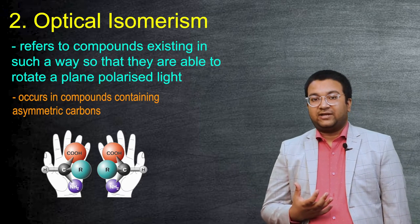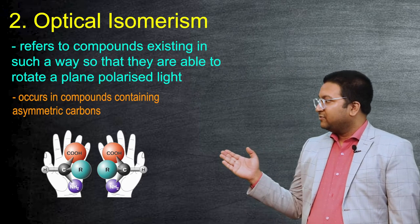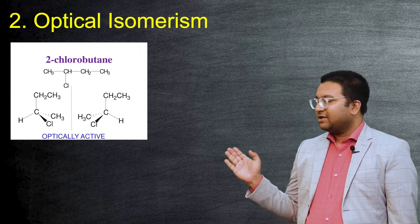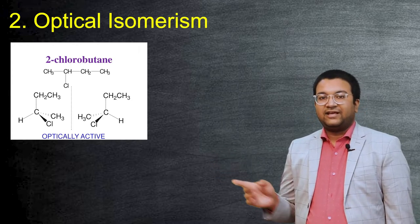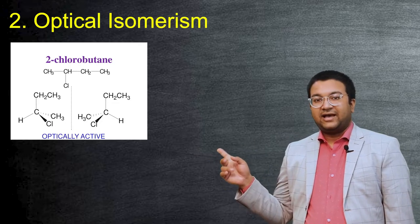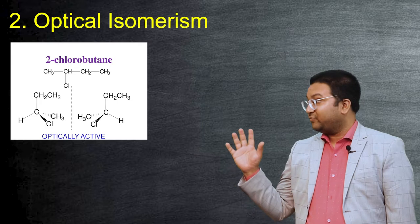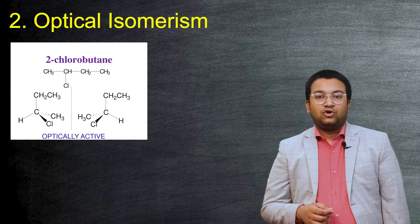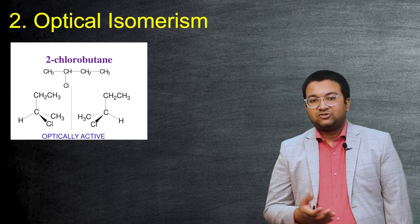These type of compounds will show optical isomerism. For example, we have 2-chlorobutane. In this case, the second carbon has a hydrogen atom, one chlorine atom, one methyl group, and one ethyl group. Therefore all four groups are different, so this compound can show optical isomerism.